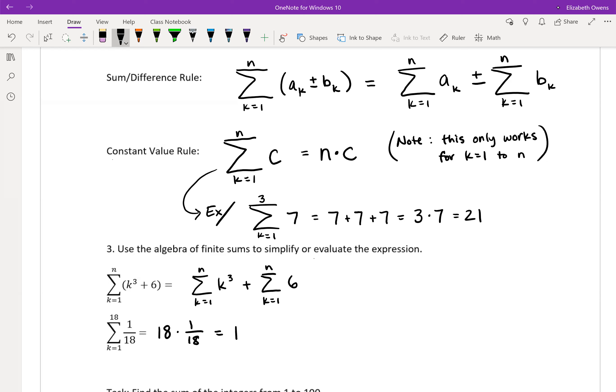Then use the constant value rule on the second part. Very nice. So we will still have this first part, k equals 1 to n of k cubed. There's not a whole lot we can do with that part right now.